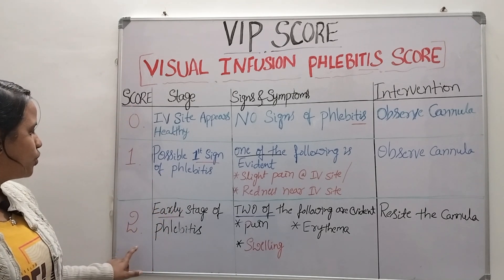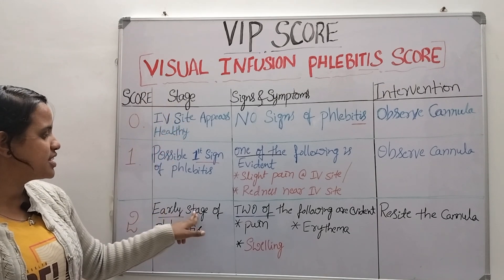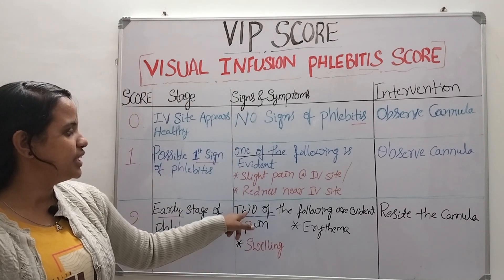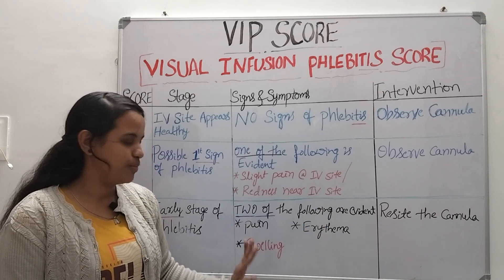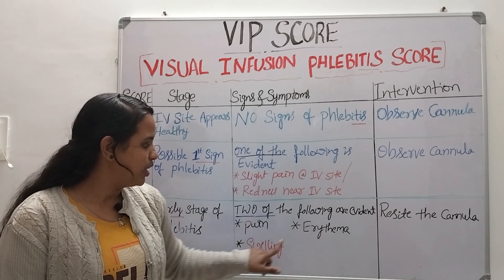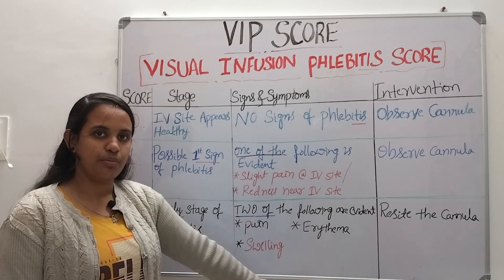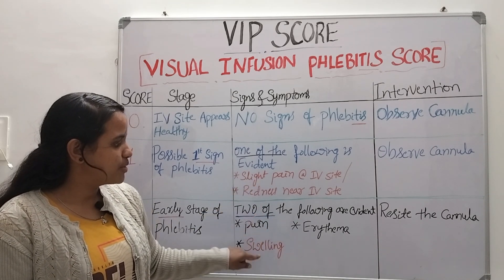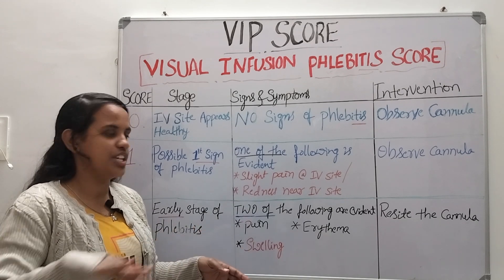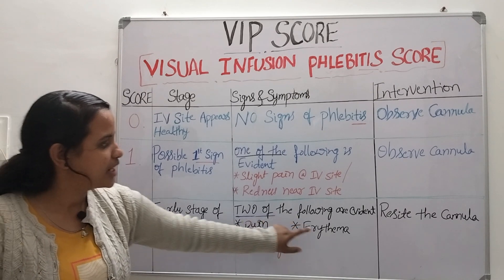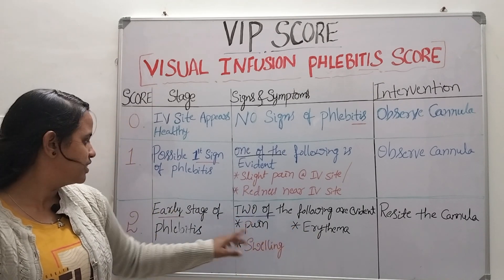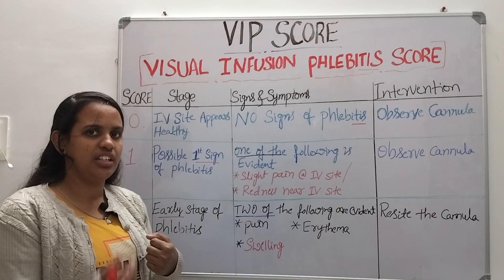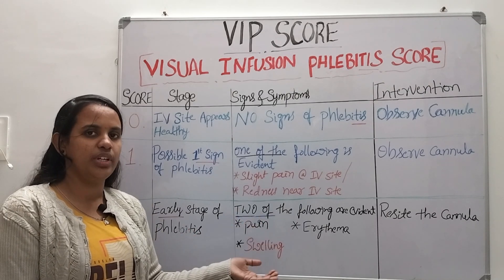When we give score 2, it means there is an early sign of phlebitis. Any two of the following three symptoms will be evident: pain, erythema, or swelling. Remember, the symptoms keep adding as the stages progress — swelling is the new addition at this stage. Our intervention is to re-site the cannula; if we do not, it will progress and lead to complications for the patient.